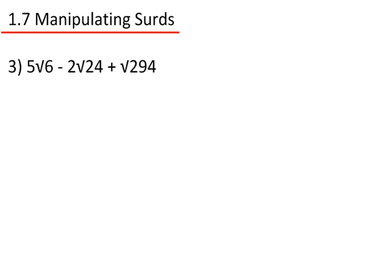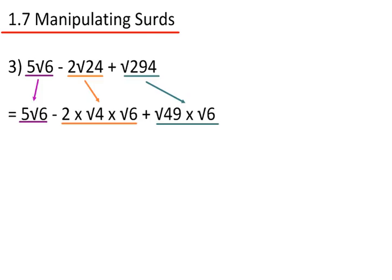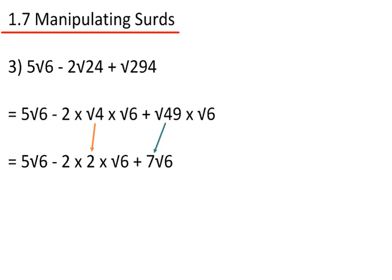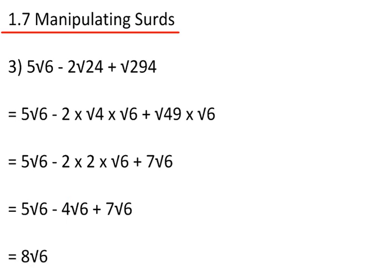Last example: 5 root 6, take away 2 root 24, plus root 294. 5 root 6 stays as it is. The largest square number that goes into 24 is 4, so that becomes 2 times root 4 times root 6. And the largest square number that goes into 294 is 49, giving me root 49 times root 6. The square root of 4 becomes 2, and the square root of 49 becomes 7. Now I have 2 multiplied by 2, which gives me 4. So I have 5 root 6, minus 4 root 6, plus 7 root 6, giving 8 root 6.